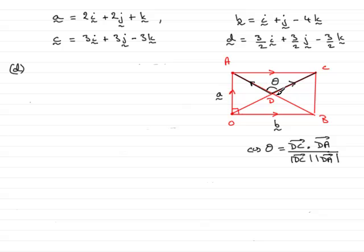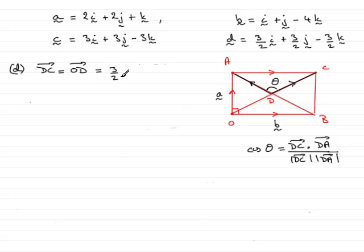With that said, we need to crack on. We need to get the vector D to C. Well, D to C is dead easy because D to C is exactly the same as the vector O to D, which we found earlier. O to D was: 3/2 i + 3/2 j − 3/2 k.